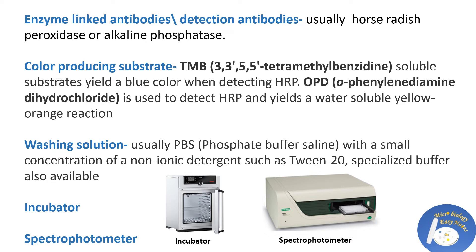Other materials used in ELISA include enzyme-linked antibodies or detection antibodies. The enzyme can be horseradish peroxidase (HRP) or alkaline phosphatase. Color-producing substrates include TMB (tetramethylbenzidine), a soluble substrate used with HRP, and OPD (o-phenylenediamine dihydrochloride), also used to detect HRP. Washing solution is typically phosphate-buffered saline with a small concentration of Tween-20, though specialized buffers are also available.